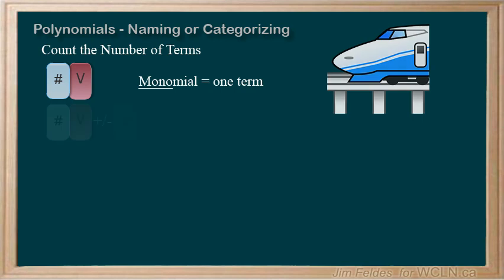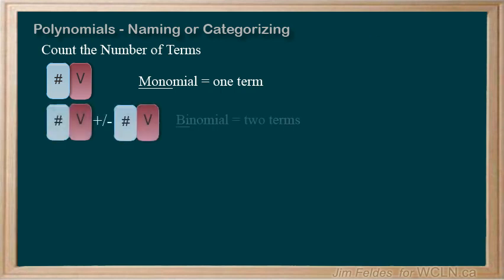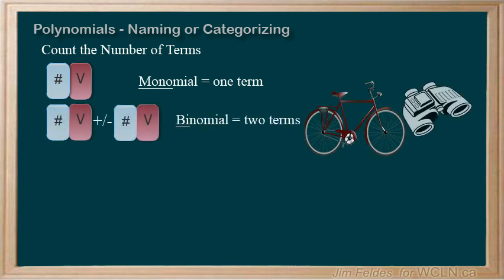When there are two terms, we use the prefix bi, as in bicycle, or binoculars.